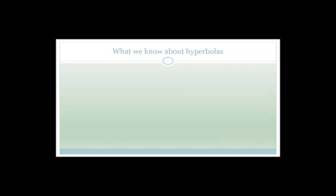Now let's talk about the hyperbola. What do we know about the hyperbola so far? The standard form is y equals a over x plus q. Actually, the standard form is y equals a over x — that is the actual standard form. This is what you've learned in Grade 10, where it can be vertically shifted.